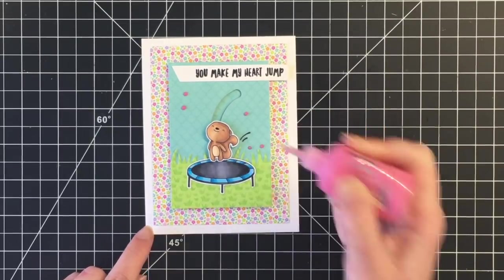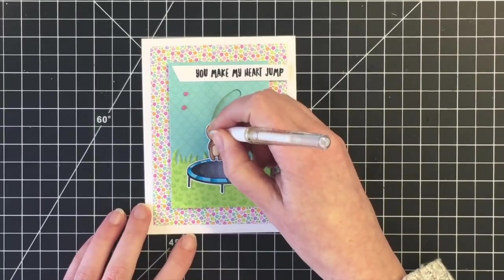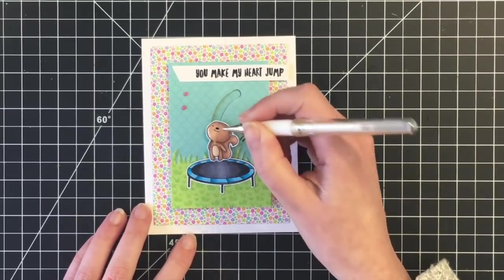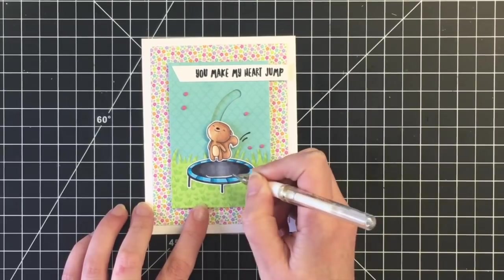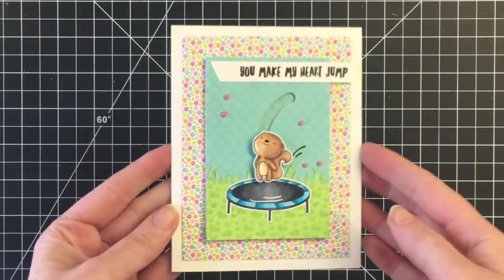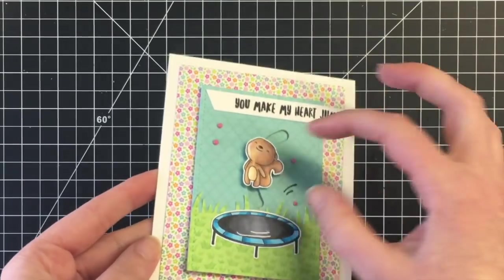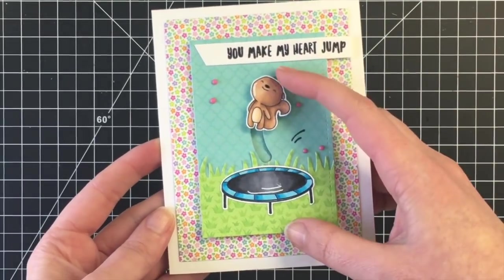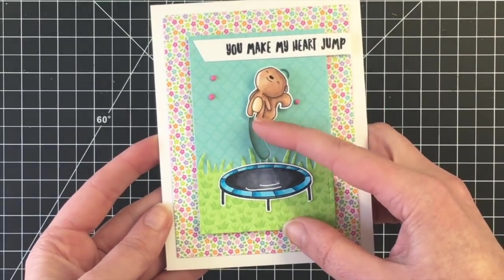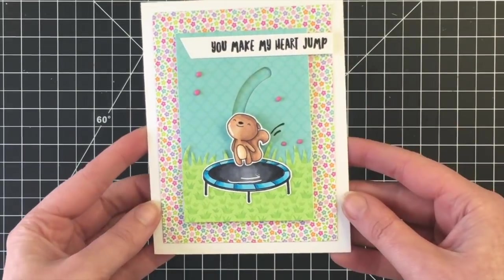Then just to finish up the card I'm going to add a little bit of white gel pen to my squirrel and the trampoline and that will finish the card for today. So I hope you've enjoyed this interactive slider card. Super simple to make with using pattern paper for the background and I think he is just adorable jumping around there.